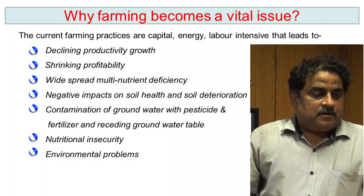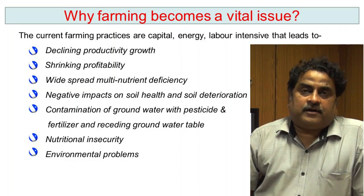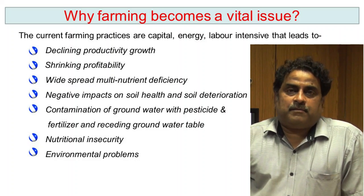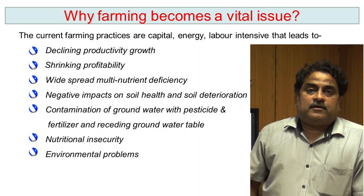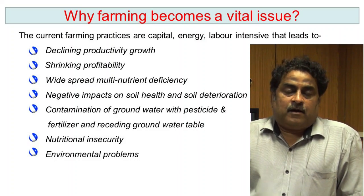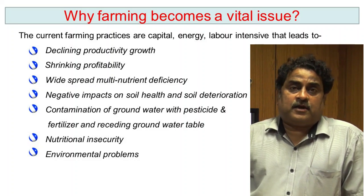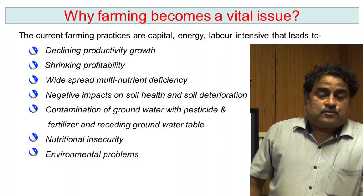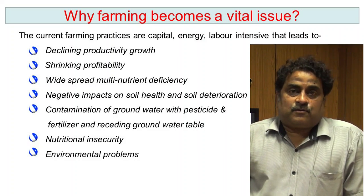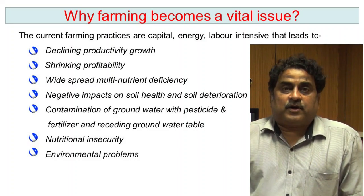Another concern is widespread multi-nutrient deficiency. We know the criteria of essentiality where 16 essential elements are required by the plant for proper growth and development. But through chemical means we are supplying only NPK. Farmers are still not using potassium and are dependent only on nitrogen and phosphorus fertilizers, so other elements are becoming deficient in the soil and hampering productivity.